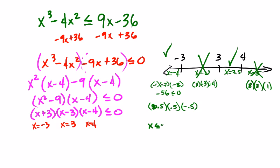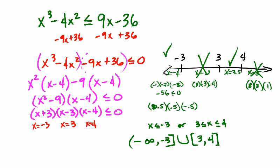So our answer is: x can be less than or equal to negative 3, or x can be in between 3 and 4. In set notation, that's negative infinity to negative 3 with a bracket, union, bracket 3 to 4. And that's how you solve a polynomial inequality — you do a lot of the same things for rationals and all kinds of other stuff like that. Have a great day.